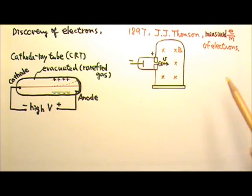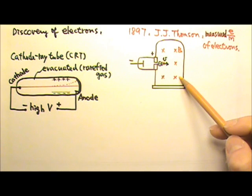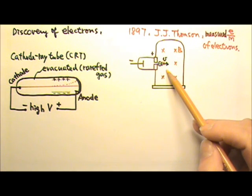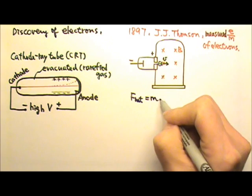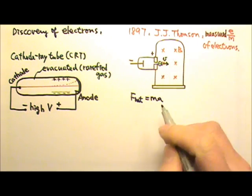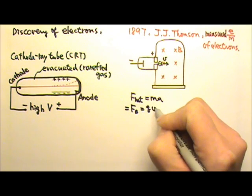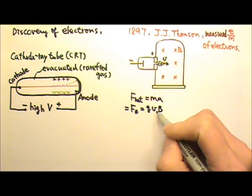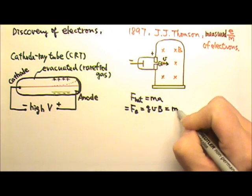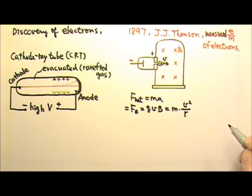One way to find the E over M ratio is to apply only a magnetic field perpendicular to the velocity of the rays, so the rays do circular motion. Therefore, we can write net force equals MA. Since there is only magnetic field, there is only magnetic force acting on the charge, and that will be QVB because B is perpendicular to V, so the angle between V and B is 1. And because the particle is going to do circular motion, the acceleration will be V squared over R.